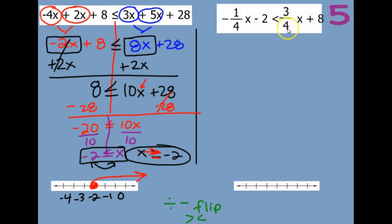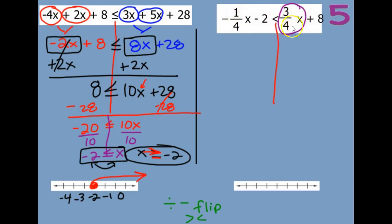This next one also looks a little tricky — here's my symbol — but it's really not that bad. So if we want all the x's on the same side, I'm just going to move this 3/4 x over to the other side. Right now it's a positive, so to move it, I would have to subtract 3/4 x.